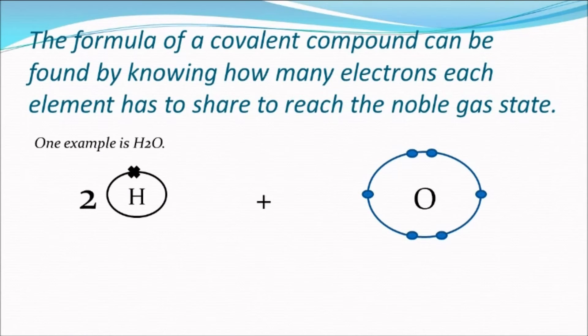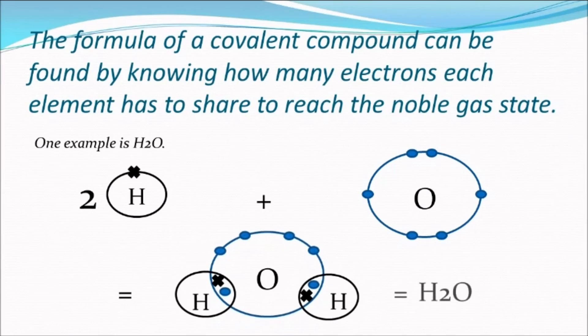Hydrogen has got one electron in the outermost shell, but two are needed to reach the noble gas state. Oxygen has got six electrons in the outermost shell. Therefore, oxygen shares two electrons with two hydrogen atoms, giving the formula H2O.